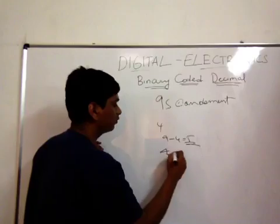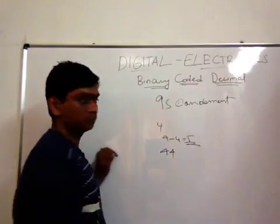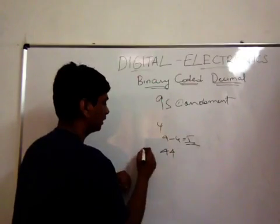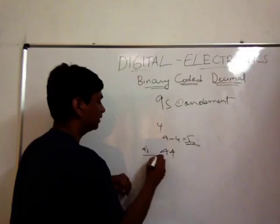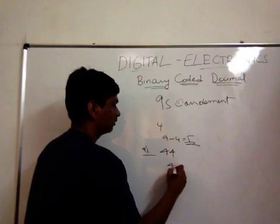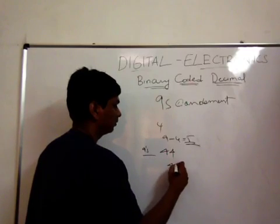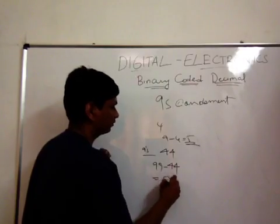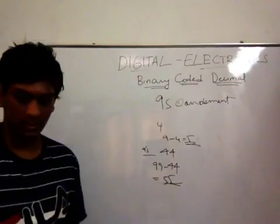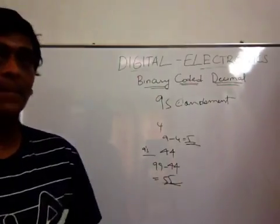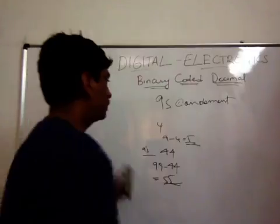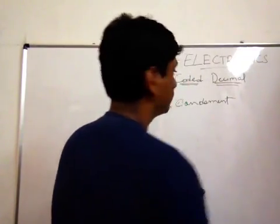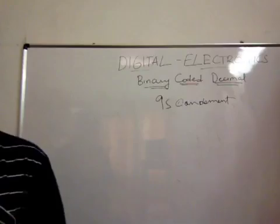If you have the number 44, then the nines complement will be 99 minus 44, which equals 55. So you need to work like that in the nines complement method.